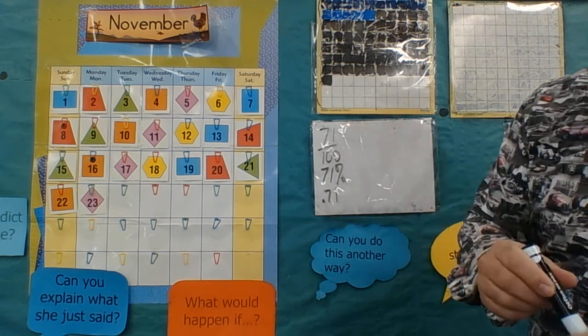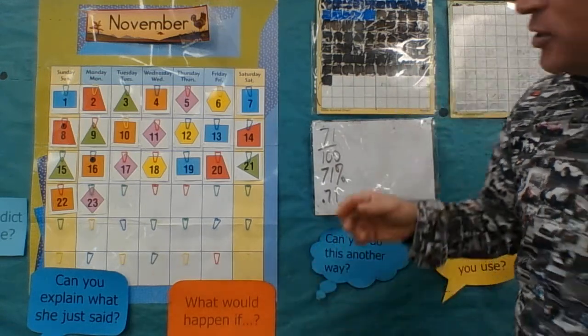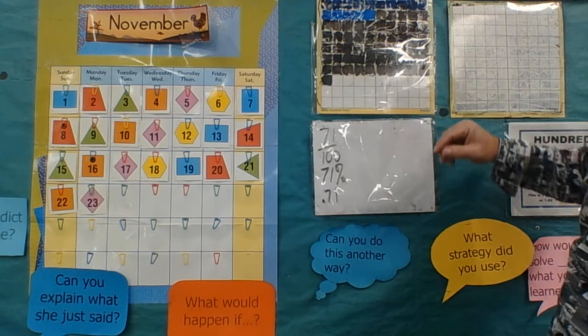But anyway, 71's prime, it's at its simplest form. Pretty cool. Hey, just kind of think, this is a pretty big number to be in simplest form.